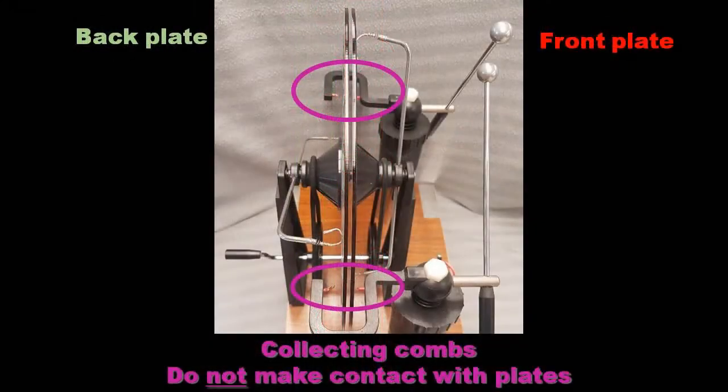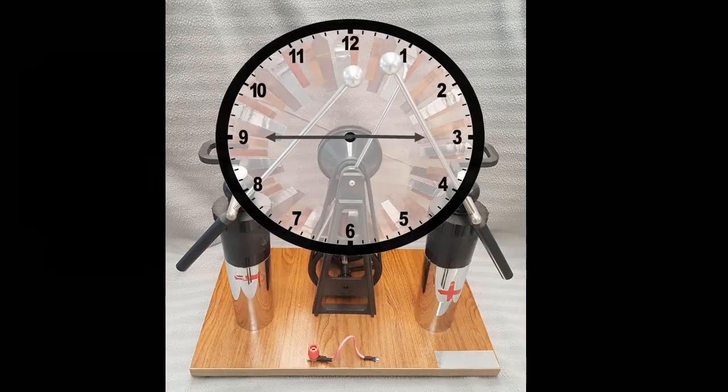Each plate essentially holds the excess charge until they reach the collecting combs, which are situated at three o'clock and nine o'clock.